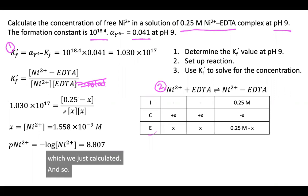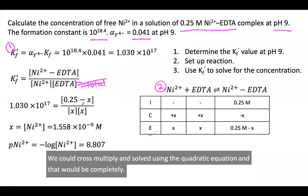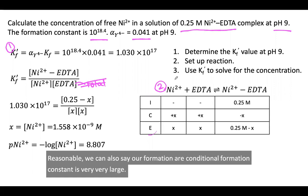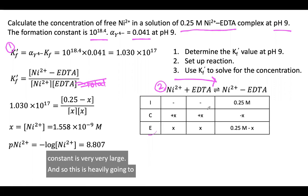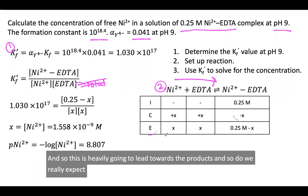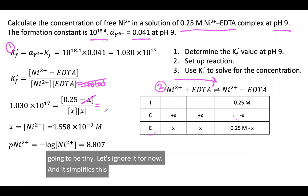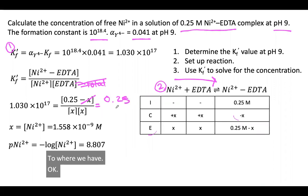We could cross-multiply and solve using the quadratic equation, and that would be completely reasonable. We can also say, well, our conditional formation constant is very, very large, and so this is heavily going to lead towards the products. Do we really expect this change to be a significant number? Our answer is going to be no. There's not going to be that much that breaks apart. So this piece is just going to be tiny. Let's ignore it for now, and it simplifies this substantially to where we have 0.25 over X squared.